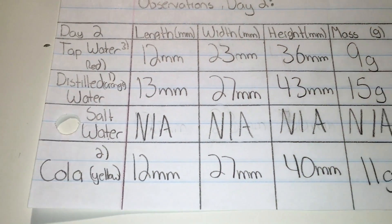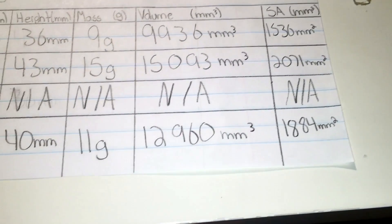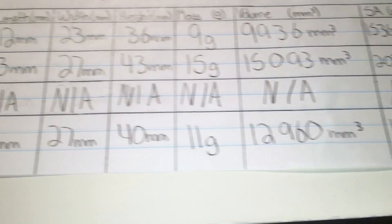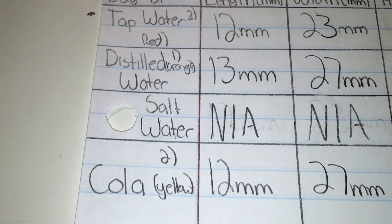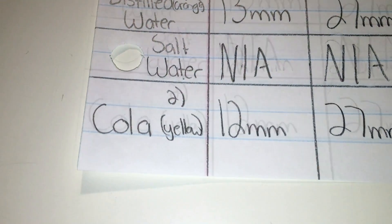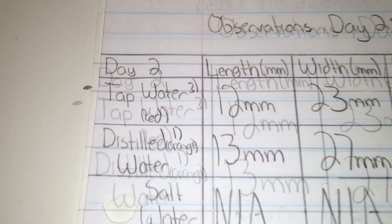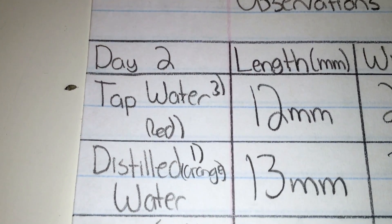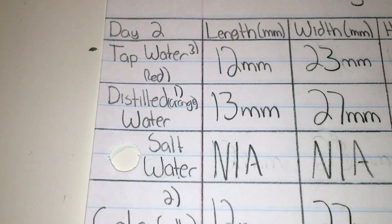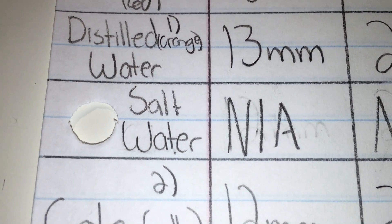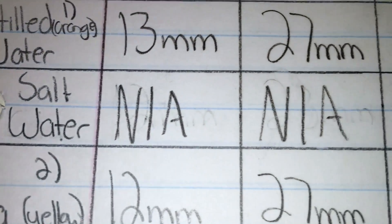Here we have it — these are the final results. In first place, we have distilled water. Second place, we have cola. In third place, we have tap water. And to my astonishment — which I thought we would be able to save — salt water came in last place, for which we have no results.